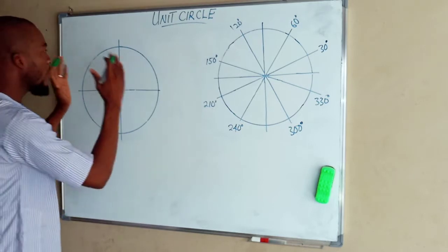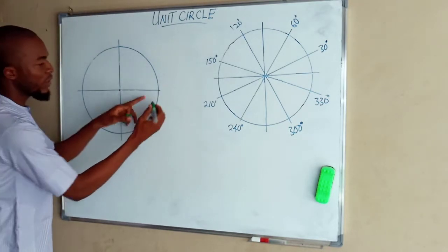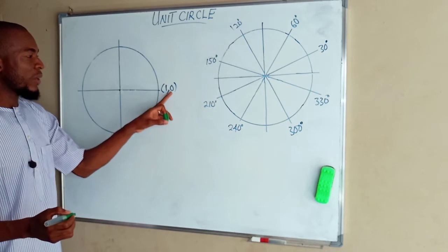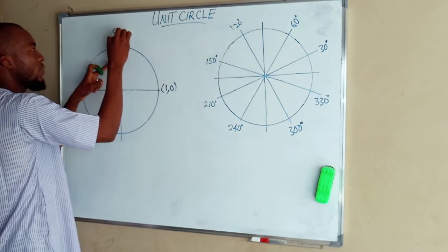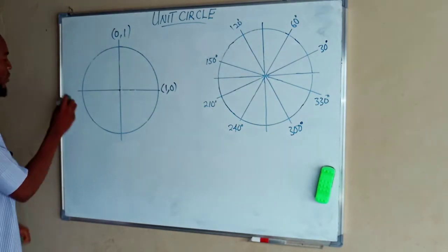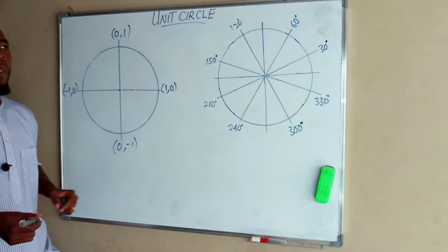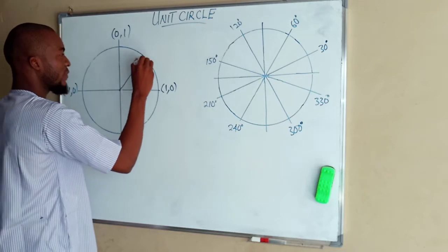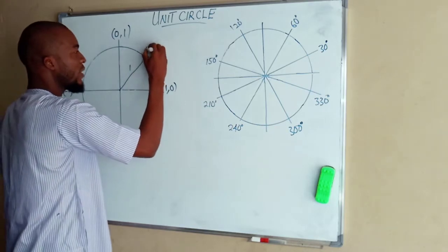Since this circle is enclosed on a Cartesian plane, we know that these two planes are always positive and the coordinate here is going to be 1 and 0, where 1 is the value of x and y equals 0. And here y is going to be 1 while x is going to be 0. But these two other ones are all negative, so we have negative 1, 0. We have 0, negative 1. This line from this point to this part of the circle is also 1 unit and the coordinate at that point is going to be x, y.